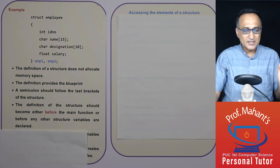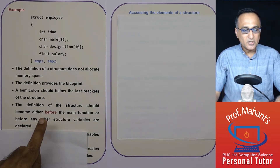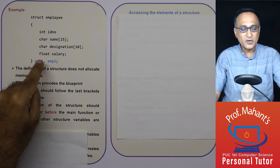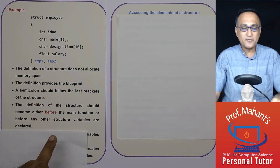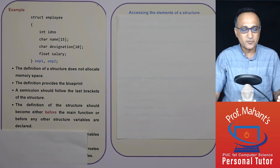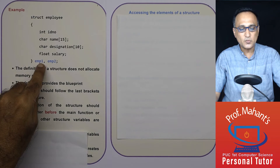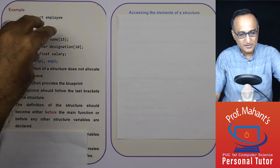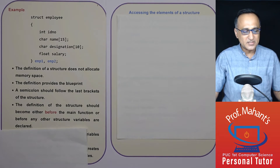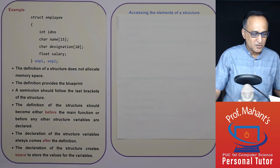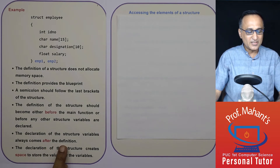It is important to understand that the definition of the structure should come before you create variables of this type — before the main function or before you use the structure variables for the first time. You cannot have the definition later and then use these variables first. You have to create the definition and then use the variables, like any other normal variables in C++. The declaration of the structure variable always comes after the definition.